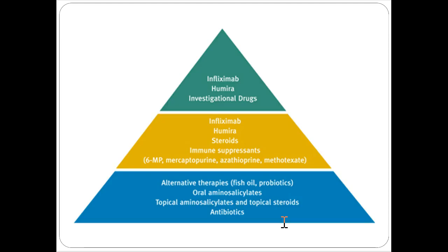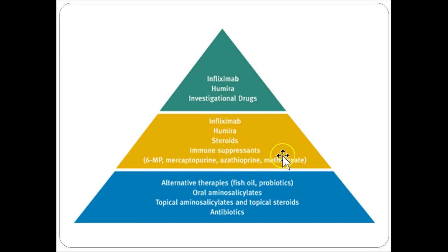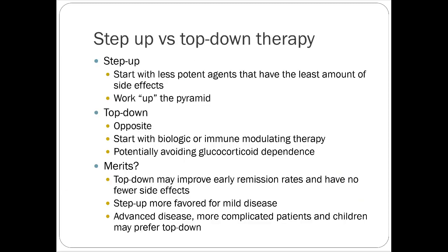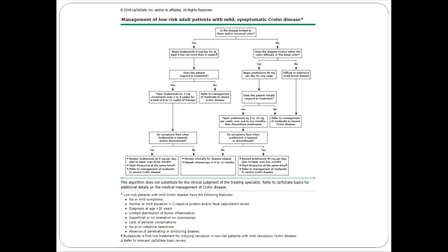The treatment pyramid for Crohn's has investigational agents and TNF alpha inhibitors at the top, with steroids and oral immune suppressants like methotrexate in the middle, and more locally acting drugs at the base. There's an ongoing debate about whether to start with a basic approach and work up the pyramid, or start with broad-spectrum immunologic suppression. Cost is a real consideration given how expensive biologic agents are.